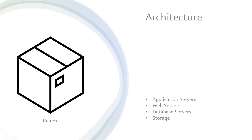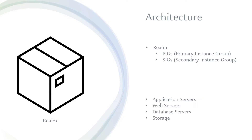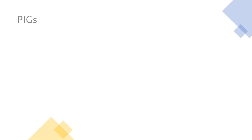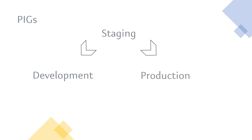Apart from that, what else is in the Realm that the developer has to take care of? It basically consists of two different kinds of instance groups: PIGs, which stands for Primary Instance Group, and SIGs, which stands for Secondary Instance Group. These are nothing but collections of sandboxes. The Primary Instance Group consists of three sandboxes: Staging, Development, and Production. Production is the live instance where the actual site resides.